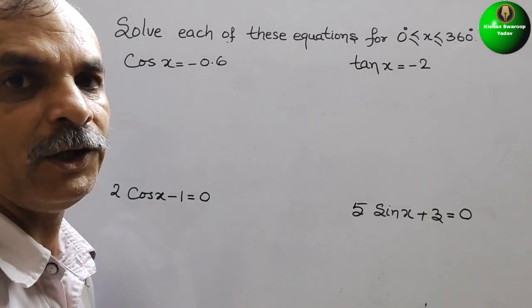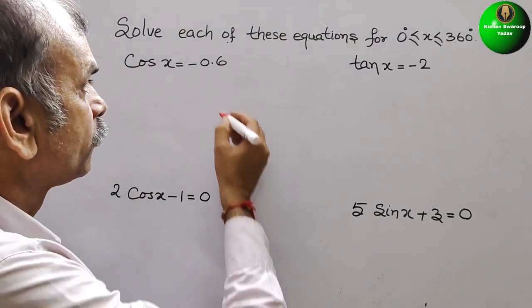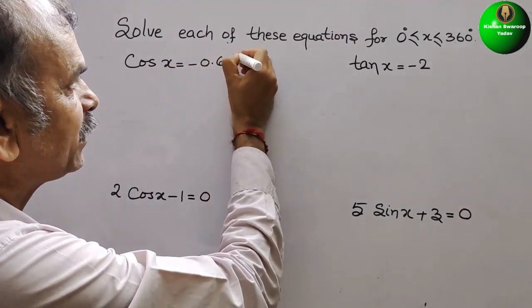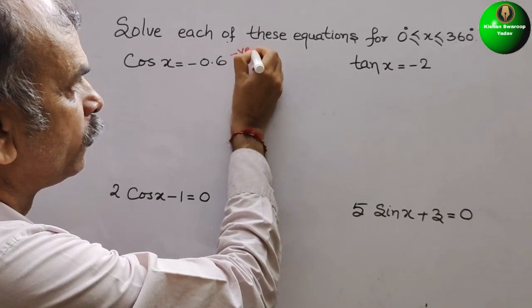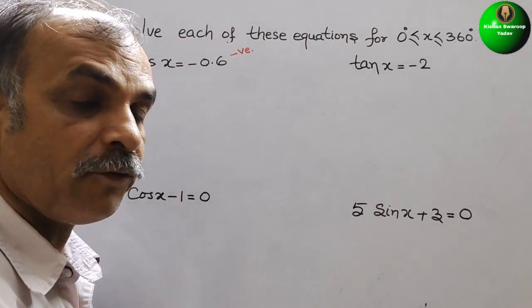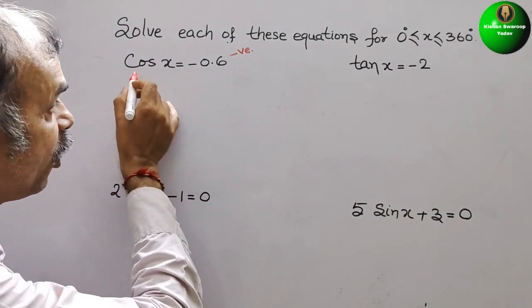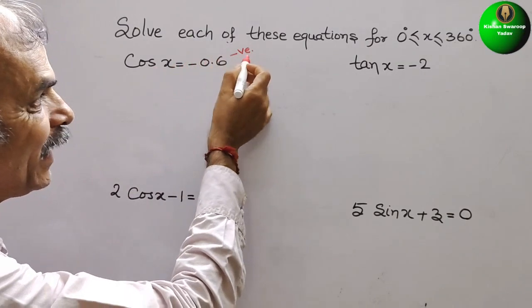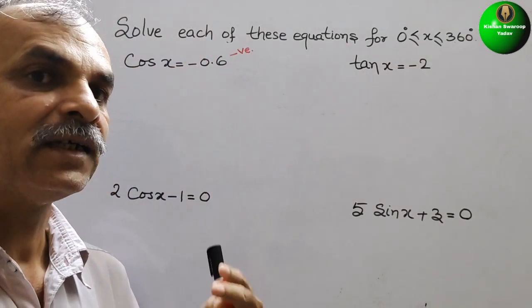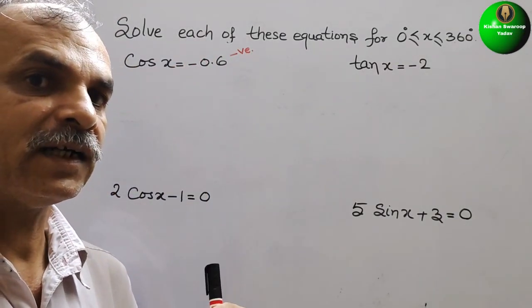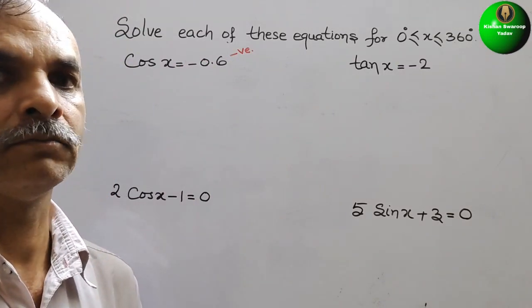So you can see the value is negative. Now we have to search where cos will be negative. Cos is negative in the second and third quadrant.